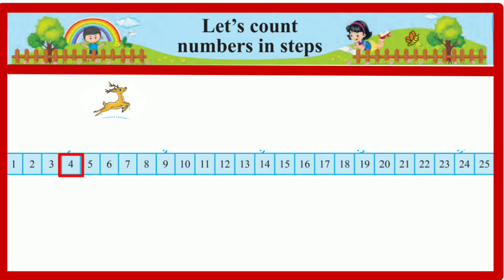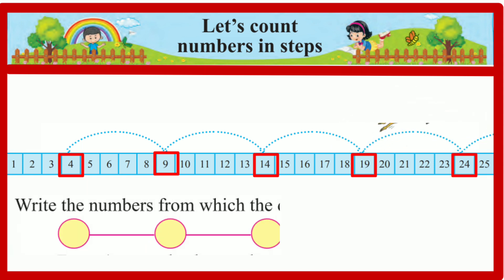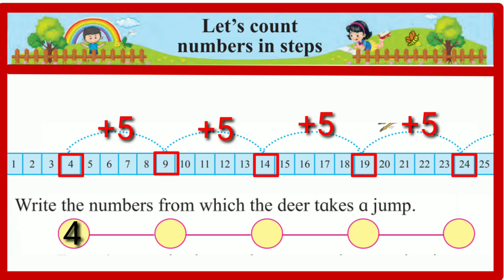Now look at the deer's jumps. Write the numbers from which the deer takes a jump. From 4 onwards, the numbers we get by counting in steps of 5 are 9, 14, 19, 24.